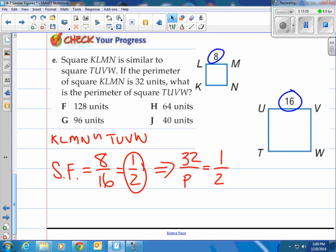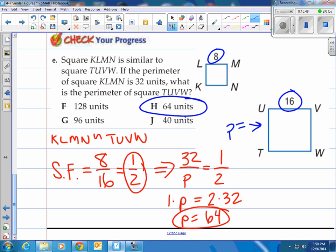We're going from KLMN to TUVW. So I'm going to put 8 over the 16. Whichever comes first, I put that one first. Then what I do is I say, we'll take our KLMN, which is 32 units for our perimeter, and put that over the perimeter of UVWT. So what do we do now? First, we cross multiply and then solve. That actually works out nice. P is actually 64. So our final answer, H is 64.